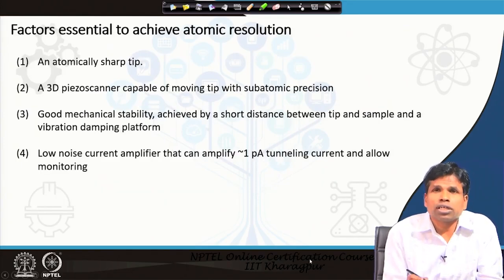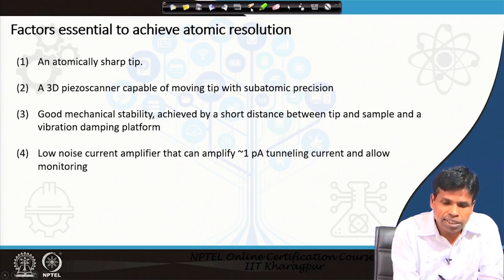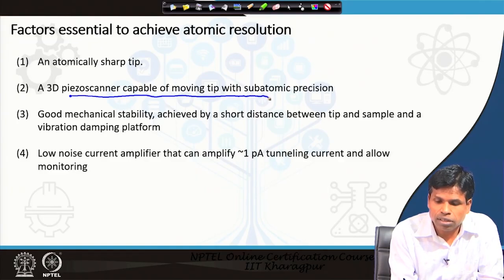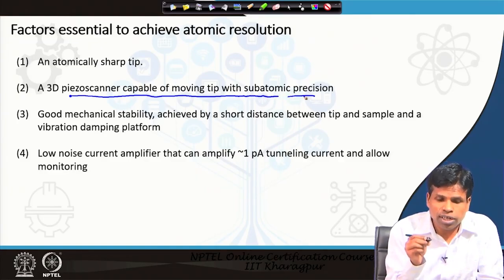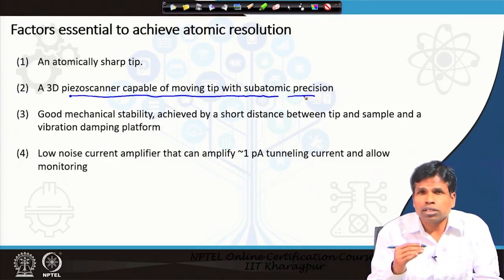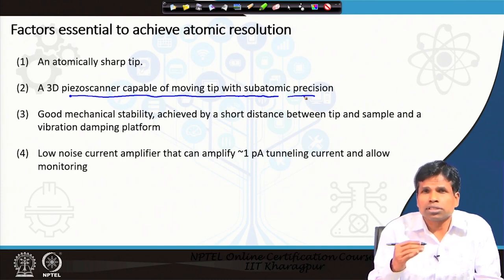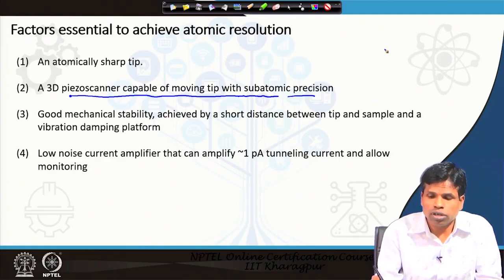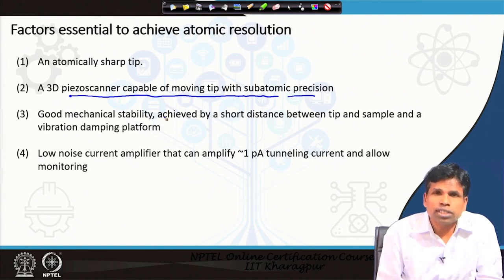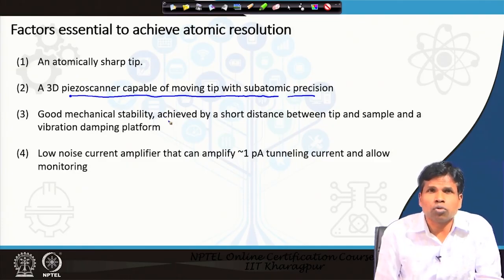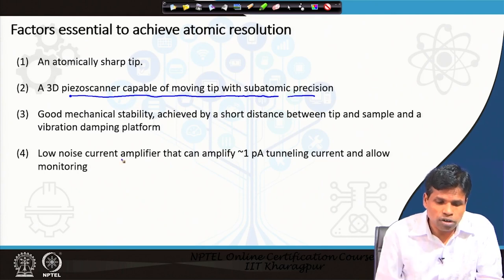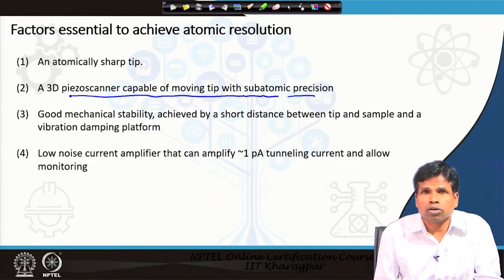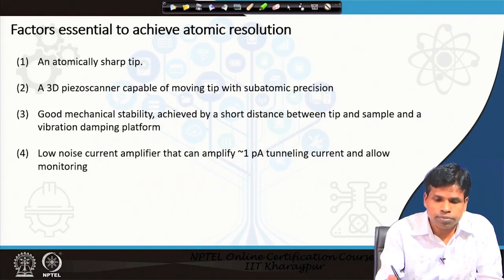To achieve atomic resolution, the factors required are: an atomically sharp tip, and a 3D piezo scanner moving the tip and sample with atomic precision. A piezoelectric scanner is used to move the tip at very small steps at the angstrom level, so we can accurately measure how much the tip has gone up or down and accordingly create the surface topology of the sample. Good mechanical stability is required because the tip-sample distance is very small, along with a vibration damping platform and a low-noise current amplifier that can amplify pico-ampere tunneling current.